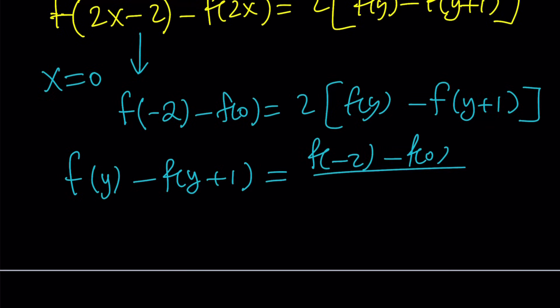First of all, we've got to remember that our function is defined over integers. So the left-hand side is kind of like a consecutive difference, f(y) and f(y+1), the difference between them. The right-hand side is made up of constants, therefore it is a constant.